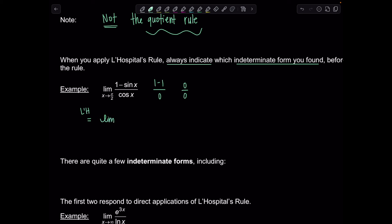Now let's try direct substitution on the new expression. In the numerator, cos(π/2) = 0. In the denominator, sin(π/2) = 1. So 0/1 = 0. This limit is 0. Remember, L'Hôpital's rule only applies for indeterminate forms of type 0/0 and ∞/∞.